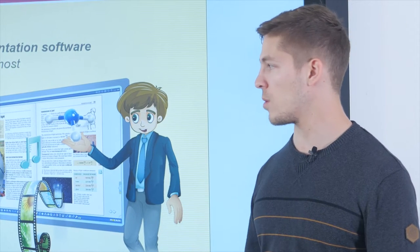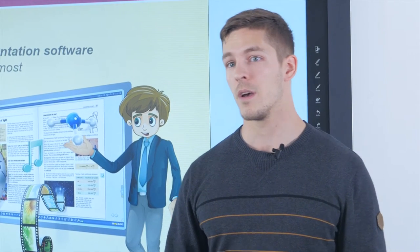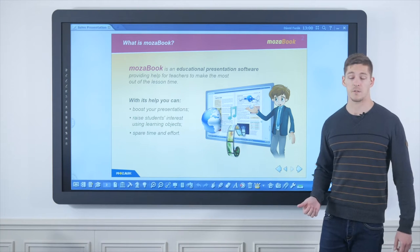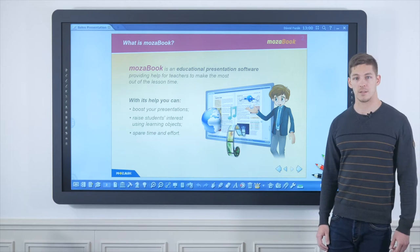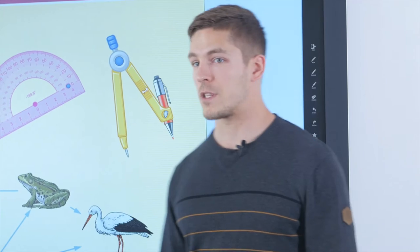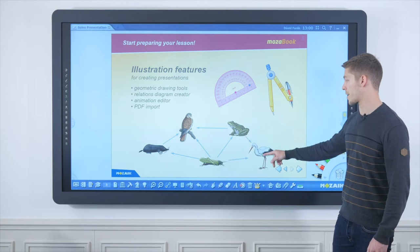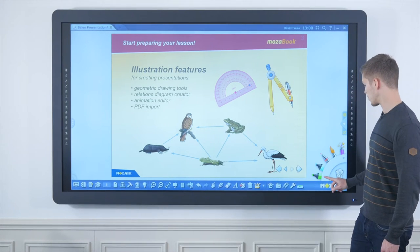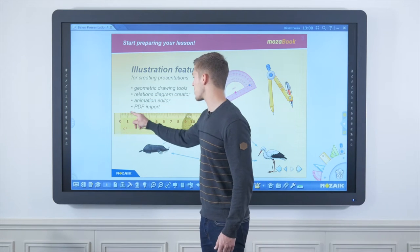MozaBook allows all these benefits by combining a vast media library full of very powerful learning objects, such as interactive 3D scenes and tools. MozaBook also has very nice annotation and presentation features. The illustration features include, for example, a relations diagram editor, and geometrical drawing tools such as a ruler, compass, or protractor.